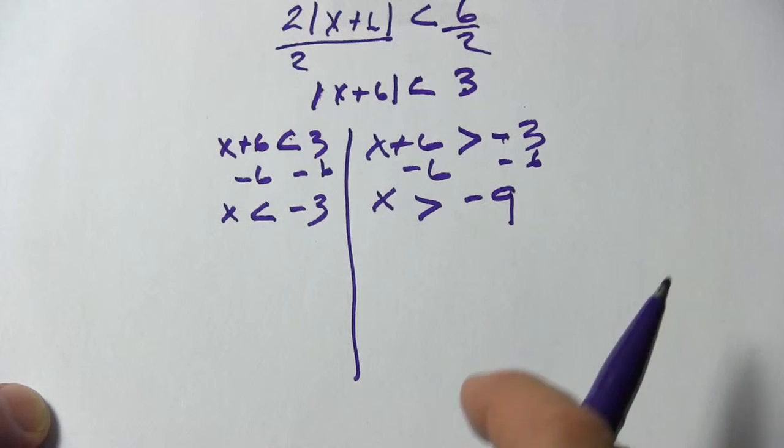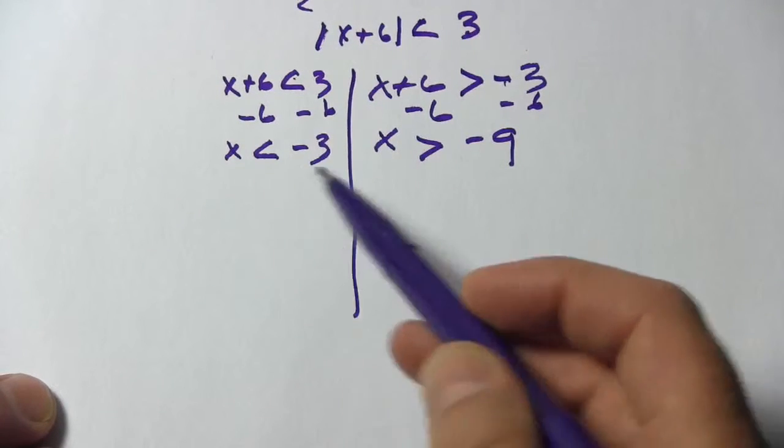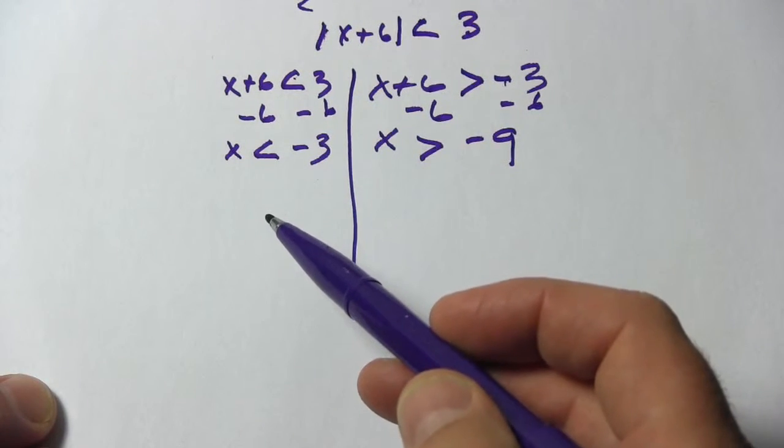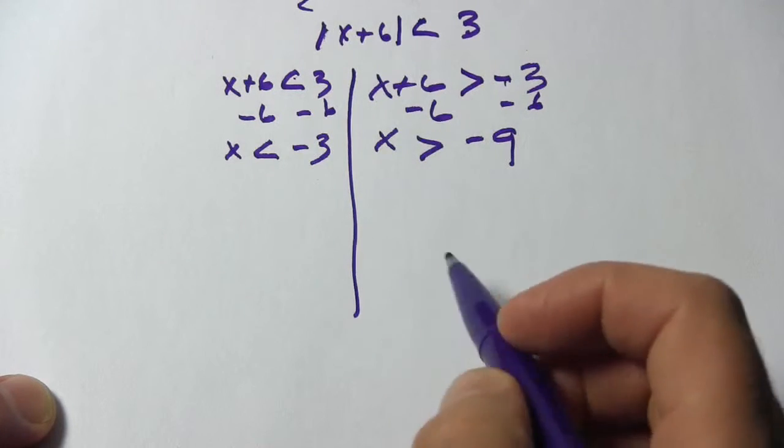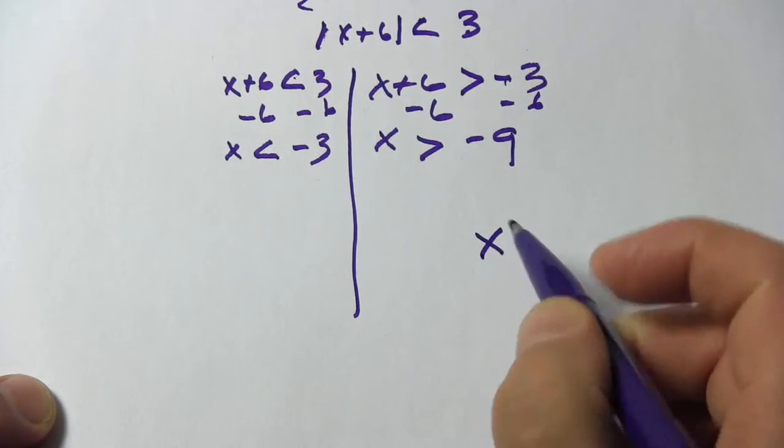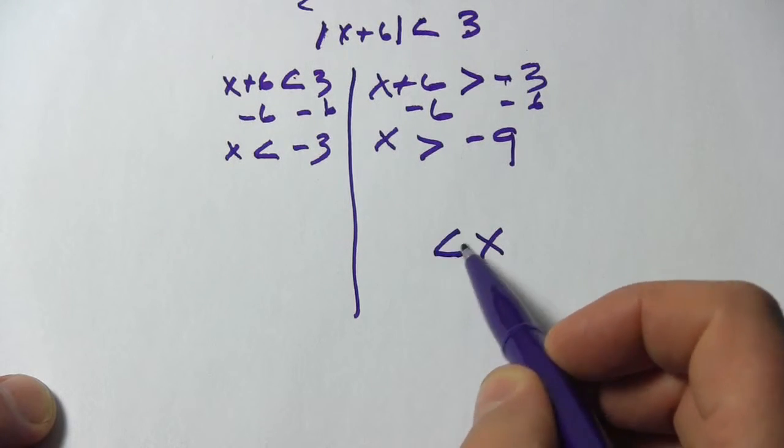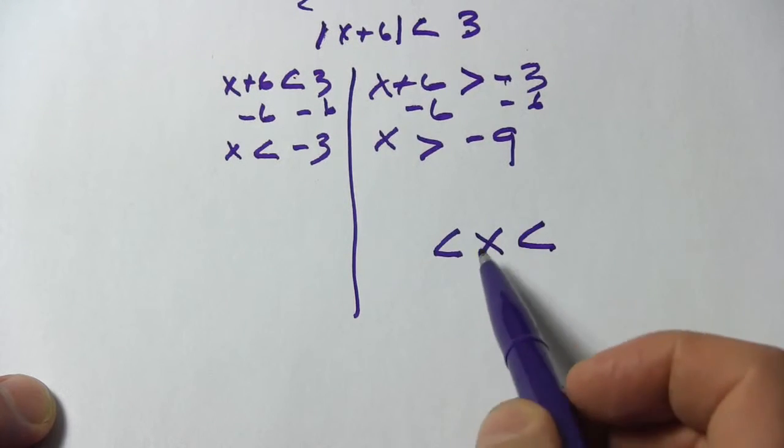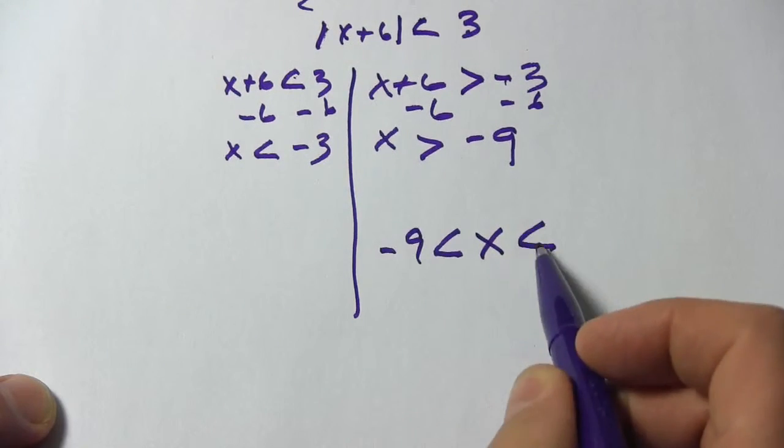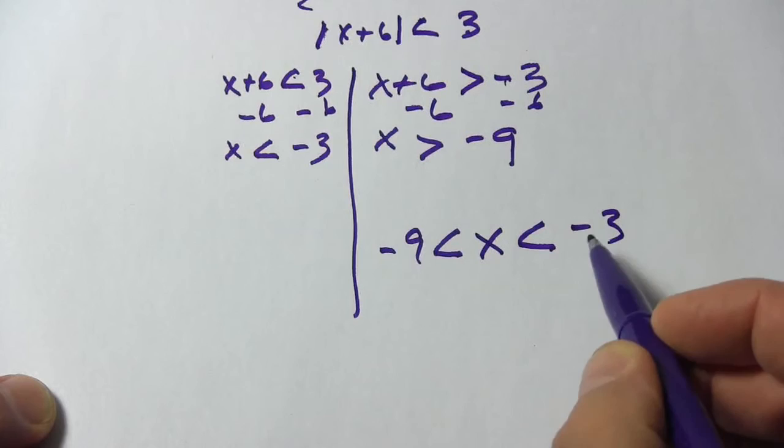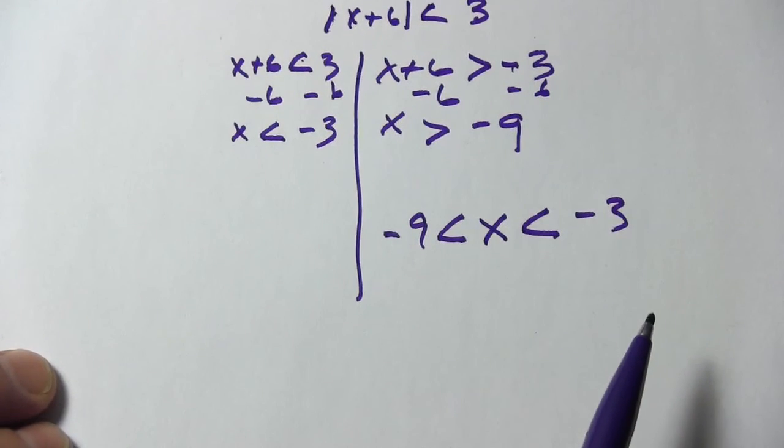So typically, we write this compound inequality, which we get when we have an absolute value inequality, with the x in the middle, and with inequality signs that look like this. So here, x is greater than negative 9, and x is less than negative 3. This shows that x is between negative 9 and negative 3.